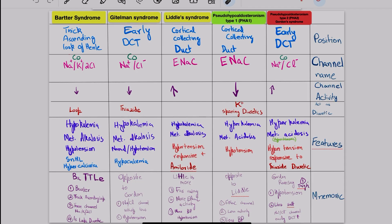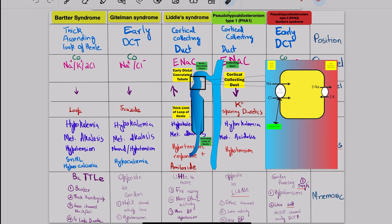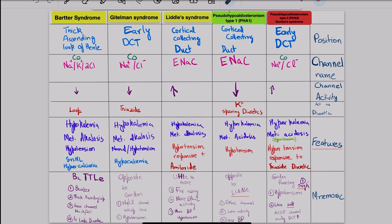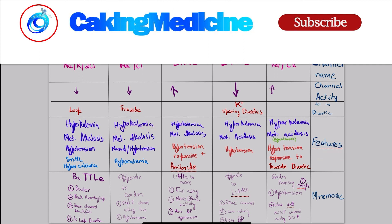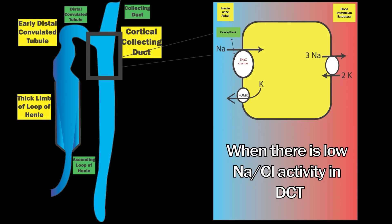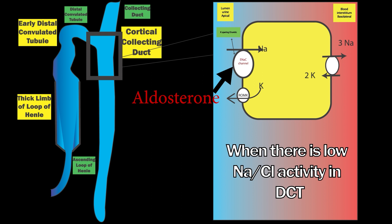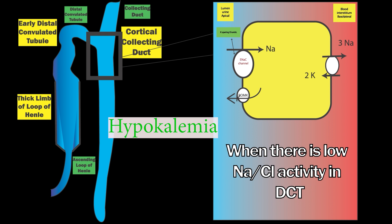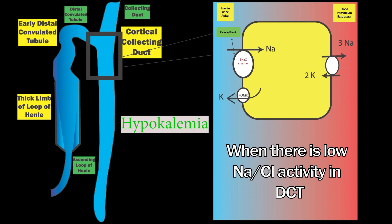In Gitelman syndrome, the defect is in the early distal convoluted tubule. The affected channel is the NaCl cotransporter, and its activity is reduced — mimicking thiazide diuretics. Features include hypokalemia, metabolic alkalosis, normal to low blood pressure, and an extra feature of hypomagnesemia. When NaCl channel activity is low in the distal convoluted tubule, the ENaC channel of the cortical collecting duct under aldosterone moves more sodium into the blood and excretes more potassium via ROMK, resulting in hypokalemia.